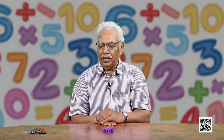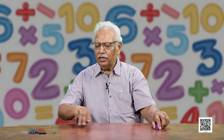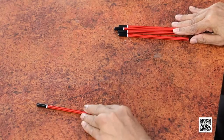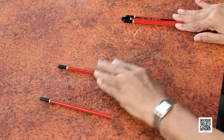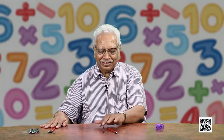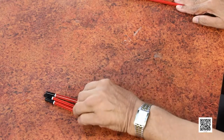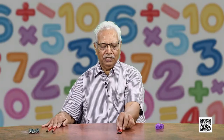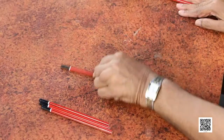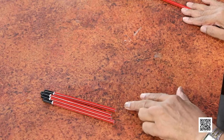We can take many things from our daily life. For example, we can take pencils to let the children add numbers up to 5. For example, 1 pencil and 1 more pencil — how many pencils are there? 3 pencils. Similarly, 3 pencils and 1 more pencil — how many pencils do they become? You can count: 1, 2, 3, 4 pencils.